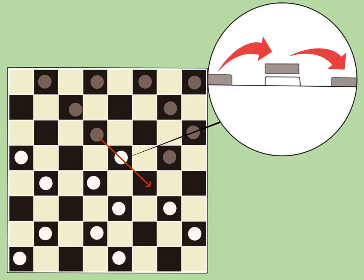Trade checkers when you're ahead. It's obvious that trading one of your checkers for two of your opponent's checkers benefits you, but even trading one for one is useful if you had more checkers to begin with.